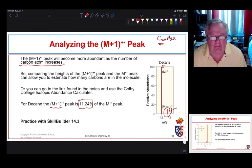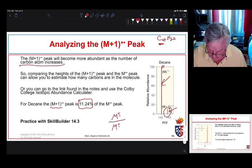So we can actually use this M plus 1 peak and the ratio of it to the base peak, the M plus peak. So the M plus peak divided by the M plus 1 peak, in this case equals 11.24%, and that's what we expect. So it's very diagnostic.